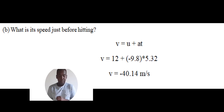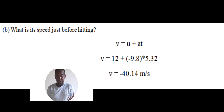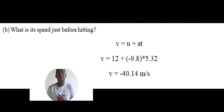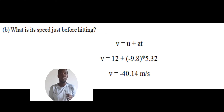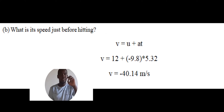Part B: what is the speed just before hitting the ground? We use v equals u plus at. u is 12, a is negative 9.8, t is 5.32. So v equals 12 plus negative 9.8 times 5.32, giving v equals negative 40.14 meters per second. The negative shows the object is moving downward - velocity going down is abbreviated as negative to indicate direction.